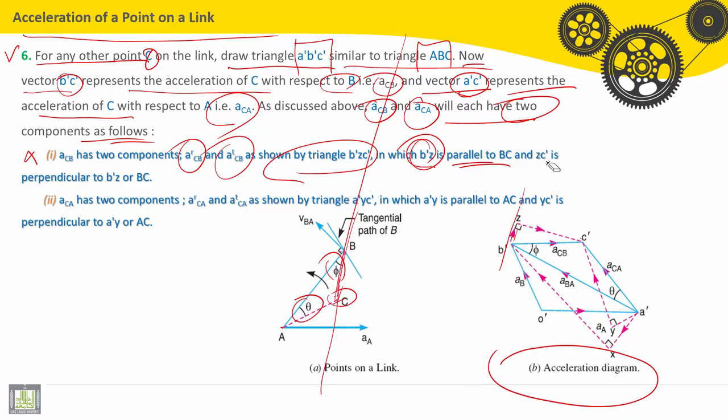And Z-C-Dash is perpendicular to B-J-Dash or BC. Just to do like that: B-J-Dash parallel to BC, perpendicular passing through C-Dash gives us Z.